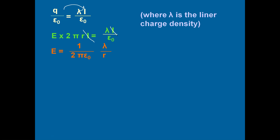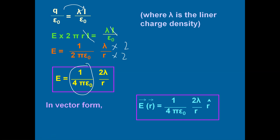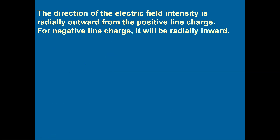To use the standard constant 1/(4πε₀), we multiply and divide by 2, rewriting the equation as E = 2λ/(4πε₀r). This is useful while solving problems because 1/(4πε₀) = 9 × 10⁹ can be substituted directly. In vector form, since electric field is a vector, we write: E⃗ = (1/4πε₀)(2λ/r) r̂, where r̂ is a unit vector. The direction of electric field is radially outwards for a positive line charge, and radially inwards for a negative charge.